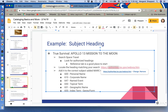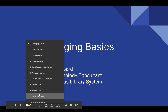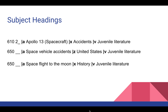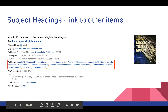Here are the subject headings associated with that book. We had Apollo 13 with the topical form of accidents and the form juvenile literature. The next would be space vehicles with the geographic location of the United States and juvenile literature, and so on. If you went into our catalog and brought up this record, you would see these linked subject headings. The box in red shows exactly where these subjects are — they are all linked, not only on the staff client side but in the OPAC. Clicking on them will lead you right to other books or materials associated with those subjects.